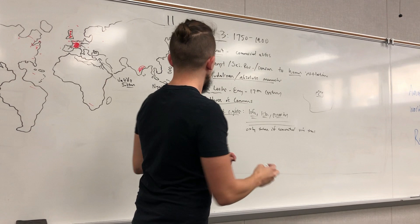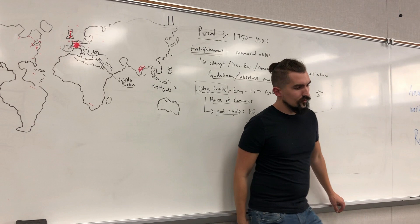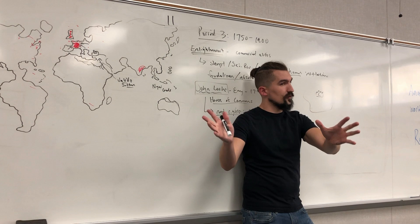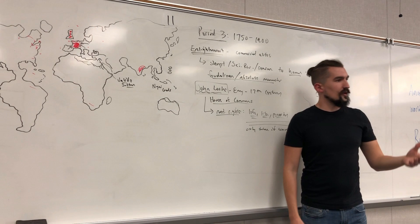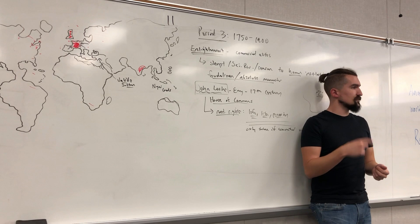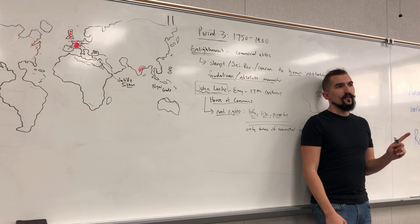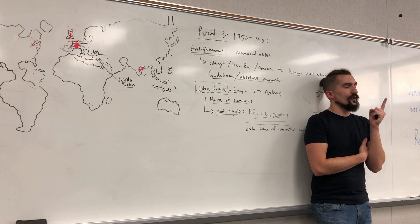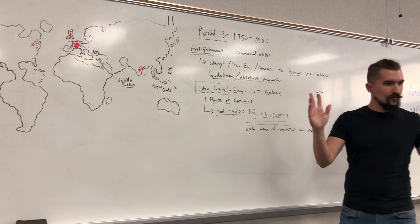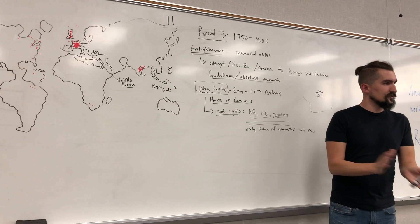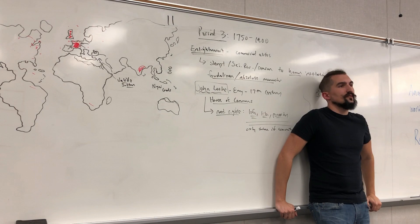Locke believed you gave the ruler their power — you consented to them being in charge. It's their job to protect your natural rights, not take them away. If the government is taking those rights even though you haven't been convicted of a legitimate crime, you need to either remove them by force, reform them out, or change the government. If the government fails to protect your rights from other people — whether a foreign country or internal threats — they have to go.